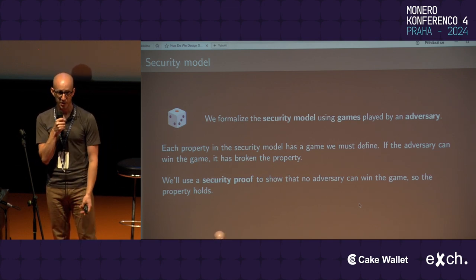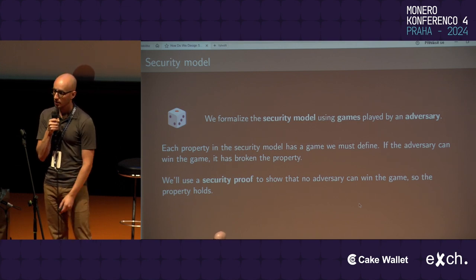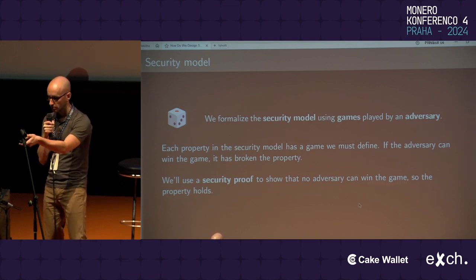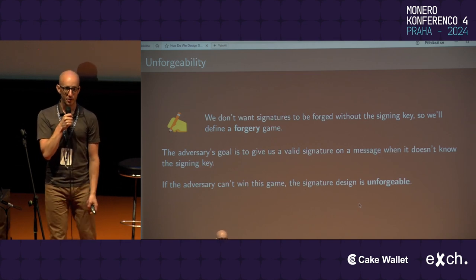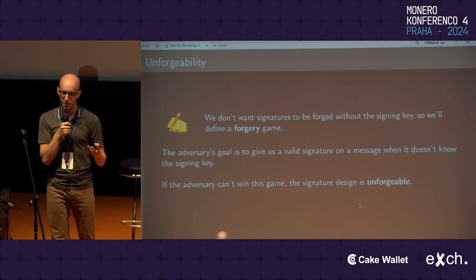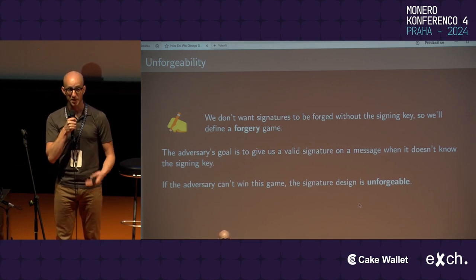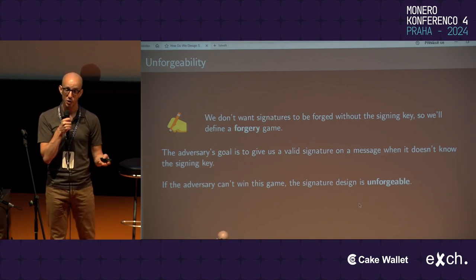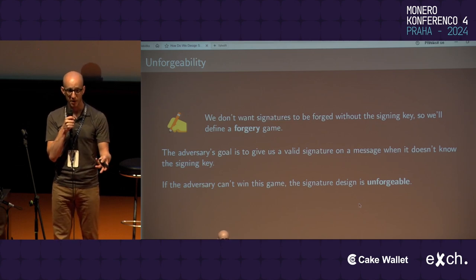When we talk about security, we have to talk about it in terms of the security model that we define. One property we typically want signatures to have is unforgeability. This makes intuitive sense — I don't want signatures to be forged without the signing key. Someone who does not have the signing key should not be able to produce a signature that convinces someone else it's real.